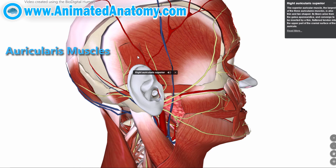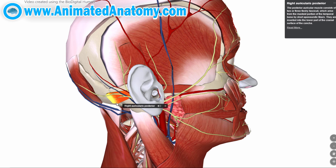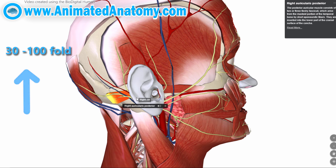We have the superior, anterior, and the posterior auricularis muscle. Now the function of these muscles is so incredible. Most human speech sounds are distributed around three kilohertz, and these muscles actually boost the sound pressure 30 to 100 fold for frequencies around 3,000 Hertz.